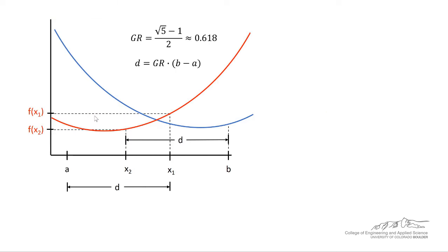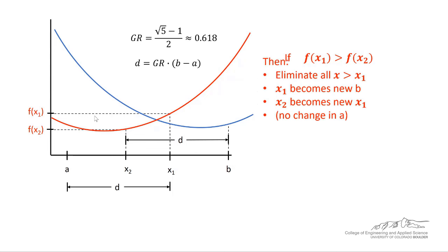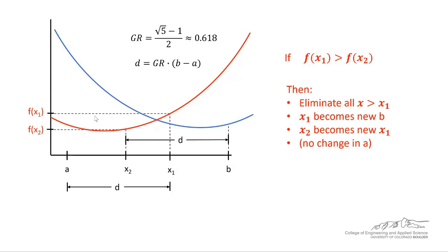Now a second scenario you could have is if f(x1) is greater than f(x2), as shown in the red curve here. If that's the case, then we're going to eliminate all x greater than x1. If this happens, then x1 becomes the new b. There's no change in a, because we're not going to change the lower bound.